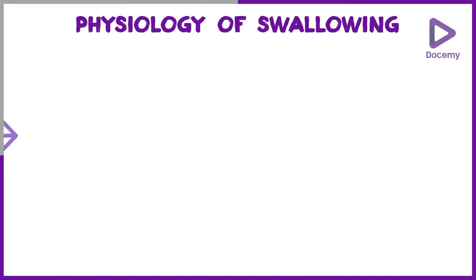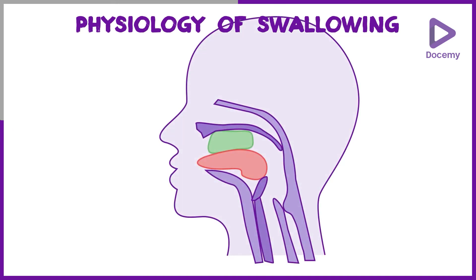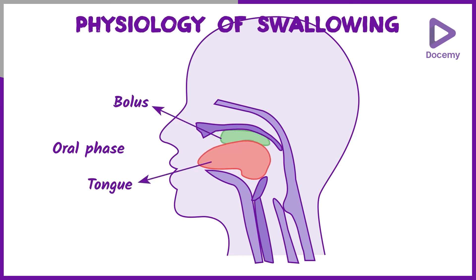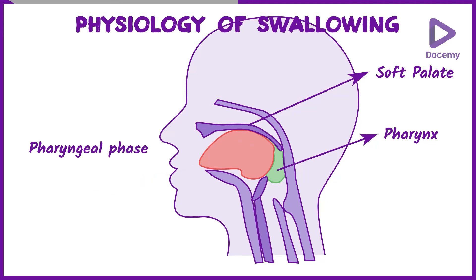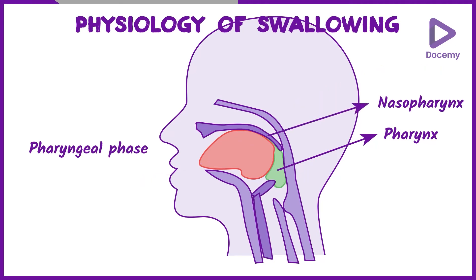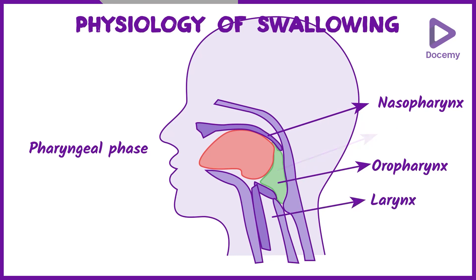The process of swallowing, or deglutition, has three stages. In the oral phase, food is made into a bolus, the tongue is elevated against the soft palate, and food is propelled into the pharynx. Then the pharyngeal phase begins, with closure of the nasopharynx, closure of the oropharynx, and closure of the larynx.